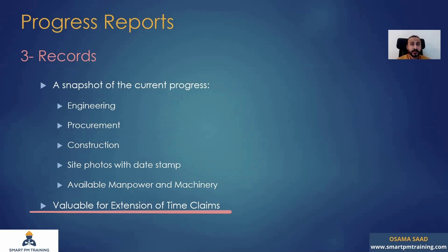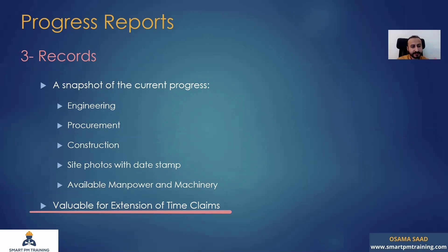For example, one month ago, you weren't able to start the paint work because the engineer could not finalize the selection of the material type. There are many things going on. One main reason is records — you want a snapshot of everything, not only the progress of construction, but engineering performance, procurement, and all other elements.